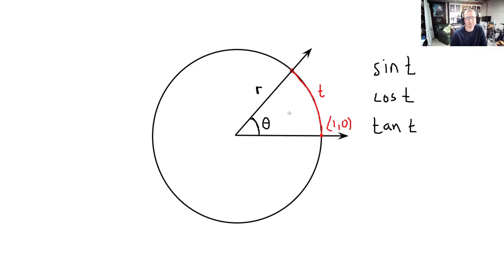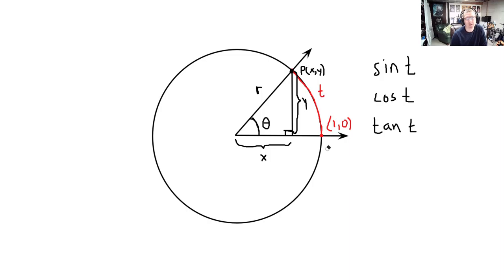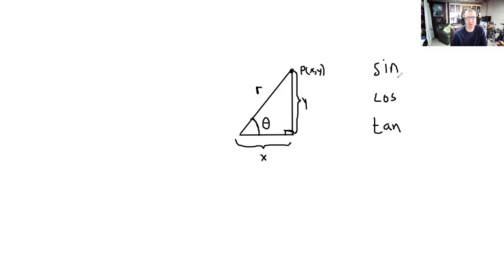I'm going to draw a triangle. We take this arc length, bring it up, form the angle, and we also have this triangle down below. This is a right triangle — a right angle of 90 degrees. The terminal point has coordinates x, y, so the length of the bottom section of this triangle is x and the height is y. Now we're going to forget all about this circle and talk just about this triangle. Instead of T, we think of this as just the angle itself, not the arc length.